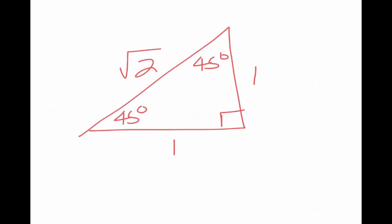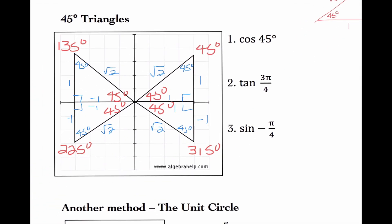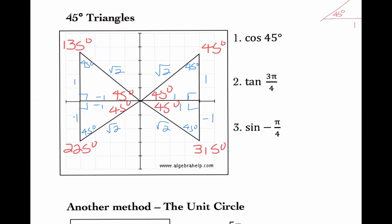So we've seen we have two special right triangles that we need to have memorized. We need to know the 30-60-90 triangle and the 45-45-90 triangle. So now let's do some quick questions. Cosine of 45 degrees: I'm finding 45 degrees, doing adjacent over hypotenuse. 1 over radical 2, we tend to write as radical 2 over 2. If you gave me 1 over radical 2, you're not wrong, but radical 2 over 2 is what we're going to see time and time again.